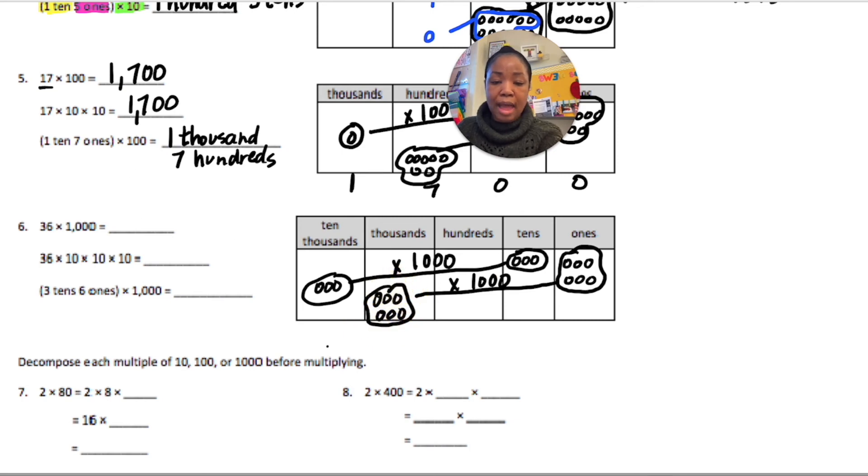Notice how I'm putting 1,000 above the arrow so that I know that's what I'm doing. So, I have 3 ten thousands, 6 thousands, no hundreds, no tens, and no ones, making 36,000. 36 times 10 times 10 times 10 is 36,000. Three tens times 1,000 is three ten thousands. Six ones times 1,000 is six thousands.